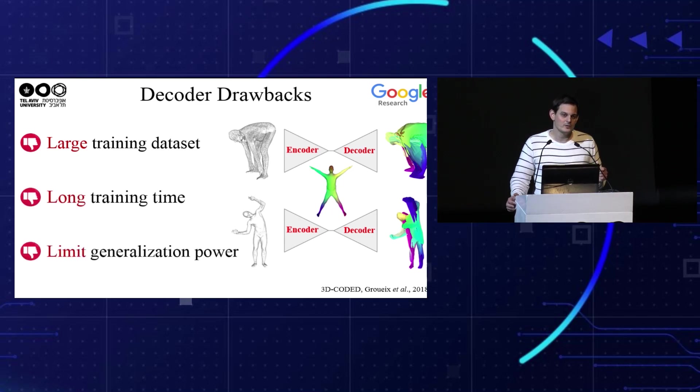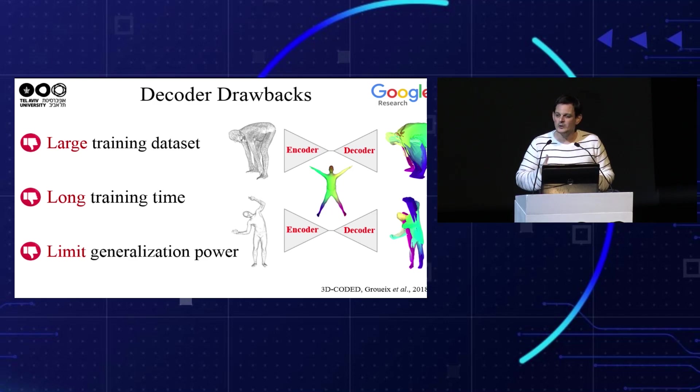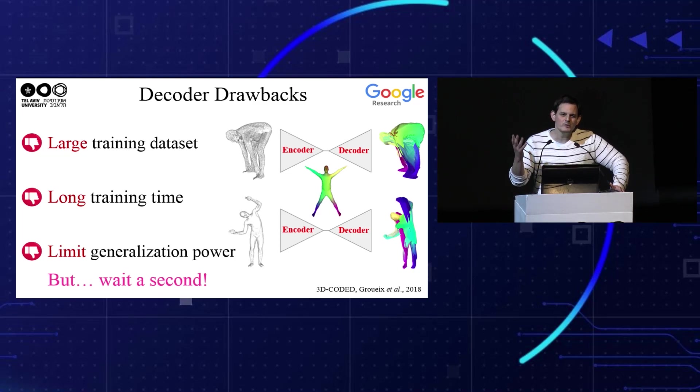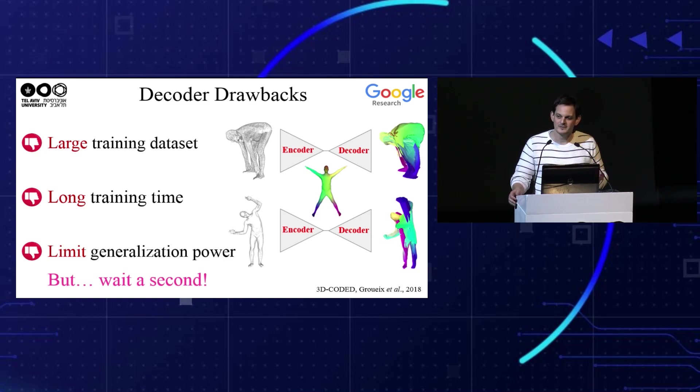Although the encoder-decoder approach is very popular in the literature, the decoder comes with considerable drawbacks. The decoder tries to regress the coordinates of the input point cloud, which is a very challenging regression problem that requires a large amount of training data, inevitably leading to a long training time. Additionally, the decoder is usually adapted to the distribution of the input shapes and limits the generalization power of the learned model — for example, to unseen shape poses. But why should we regress the point coordinates? They are already given. So why not drop the decoder and use the points instead?